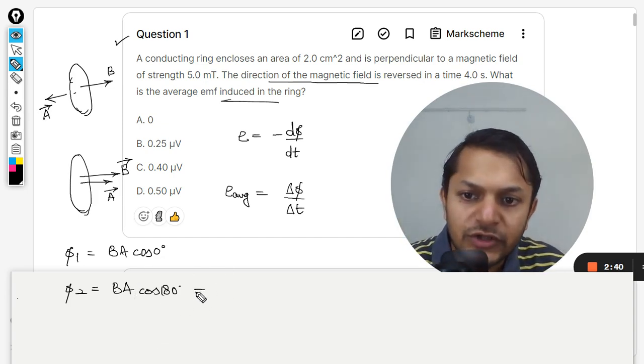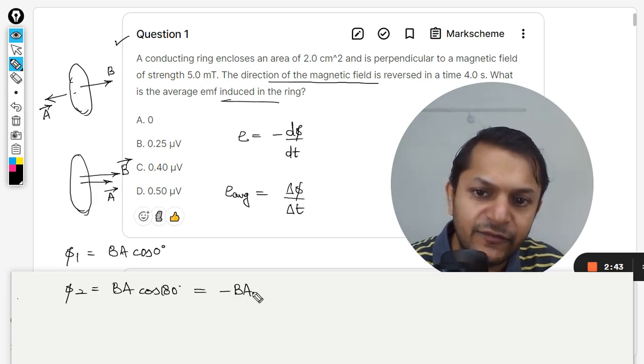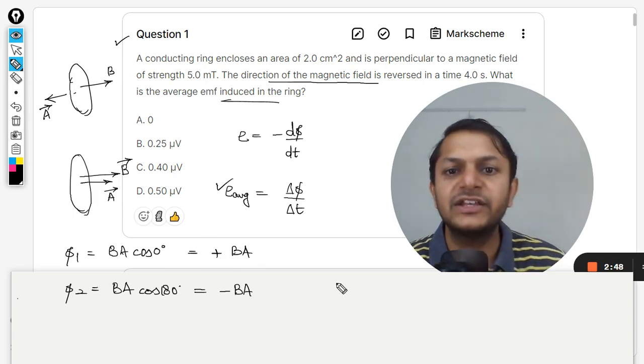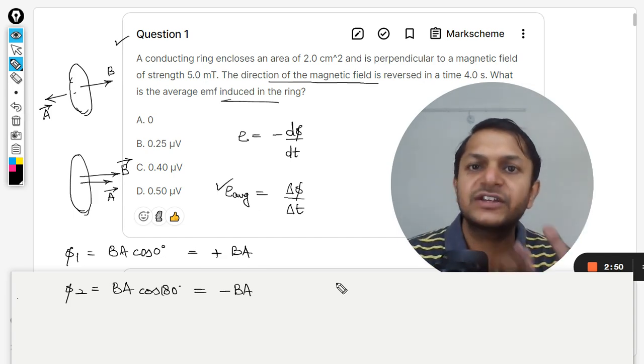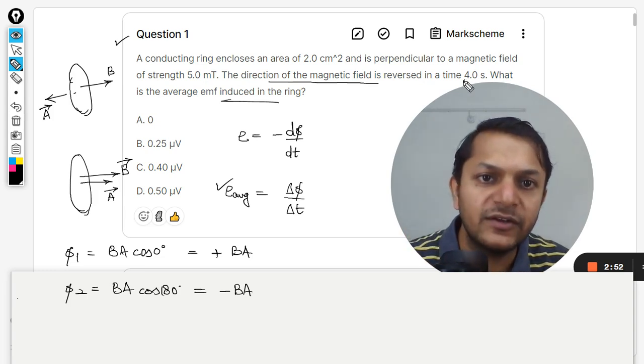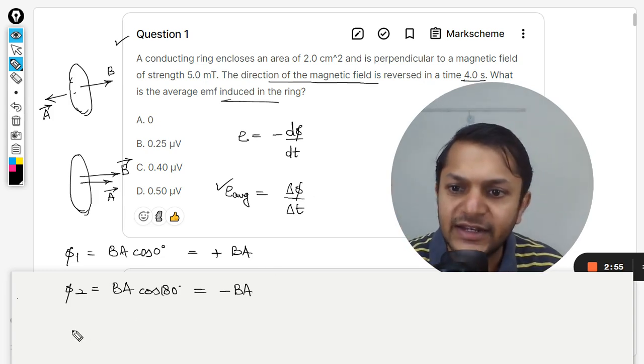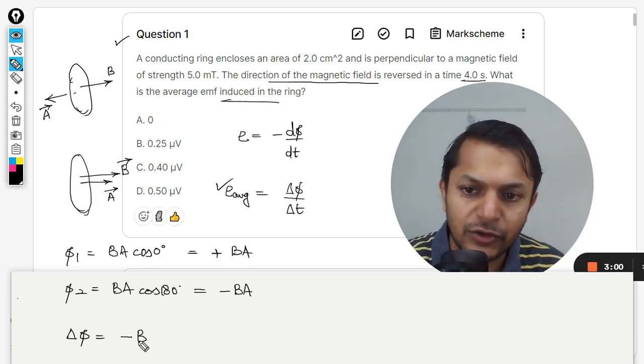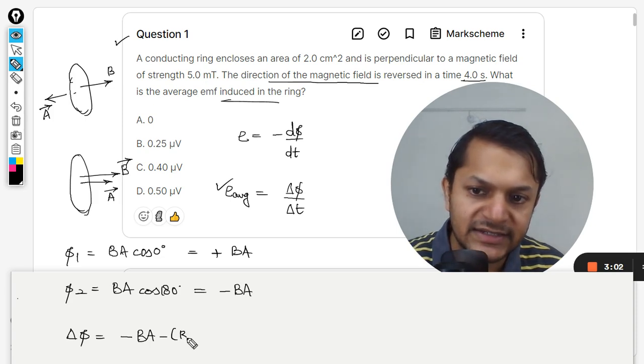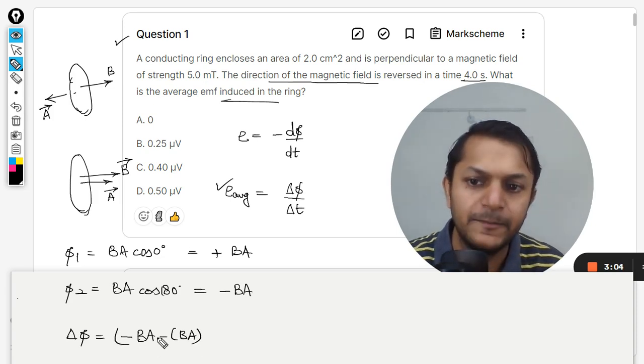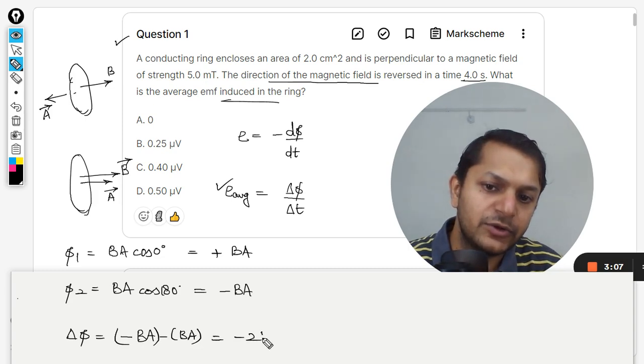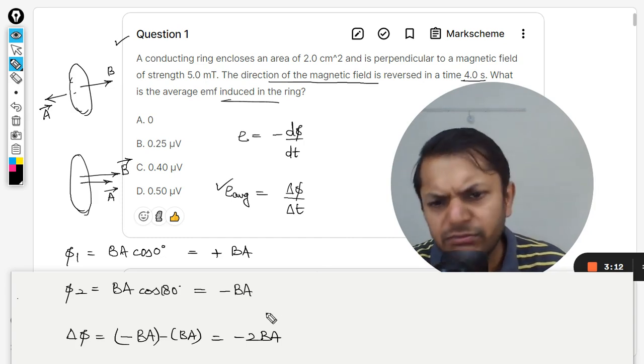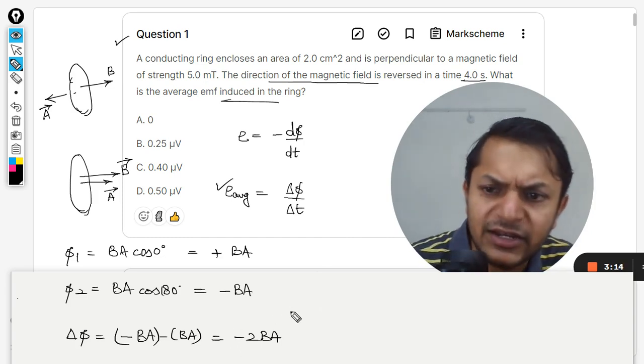The area vector has been shifted by 180 degrees so the angle between them is now 180. So cos 180 is negative one, so it will be -BA. And this initial was the positive BA. I'm going to apply this formula now: change in flux divided by change in time, and total time taken for this process is 4 seconds that is given. So I need to find ΔΦ.